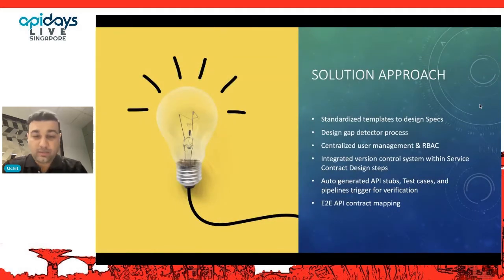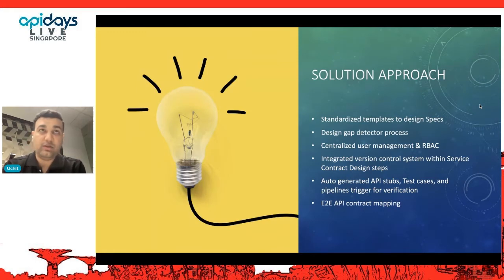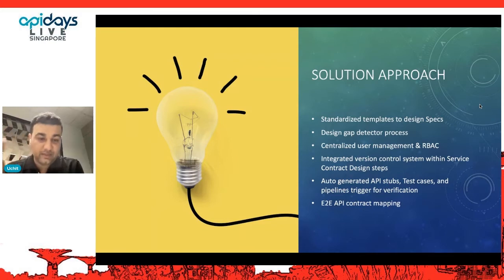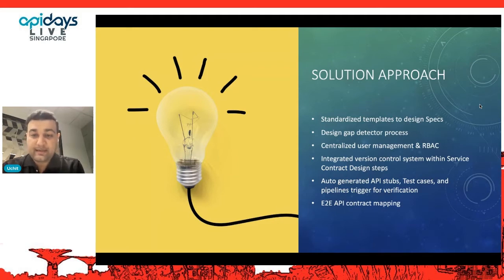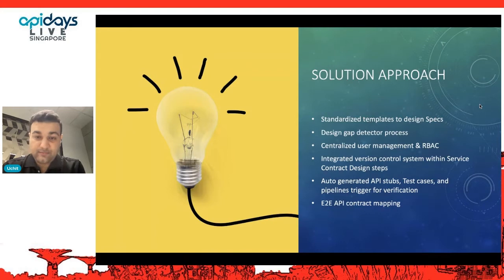The solution approach I derived from multiple clients is: use standardized templates to design specs — meaning whatever template teams use, it should be consistent across the organization, such as using SwaggerHub across all projects. A design gap detector process should be in place so that if something is not aligned with another team's service contract, it is detected at the design phase. Centralized user management and RBAC strategy should define who can access, change, view, or edit contracts. Integrated version control within the design phase is also very much required to manage the contract lifecycle.